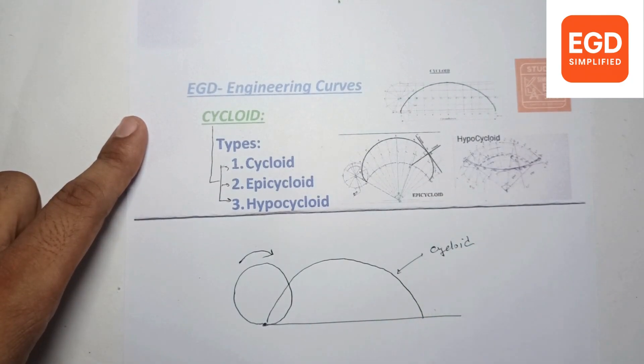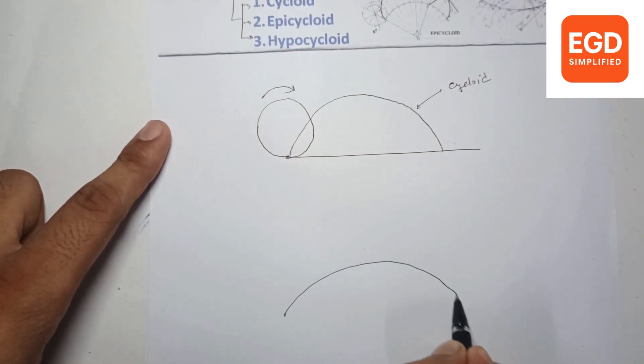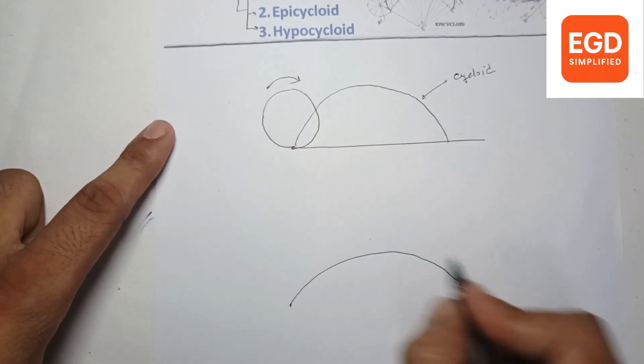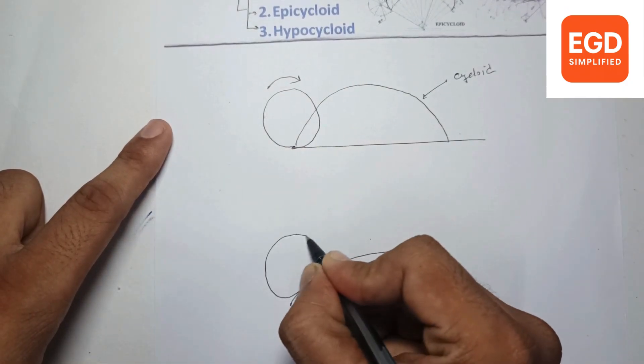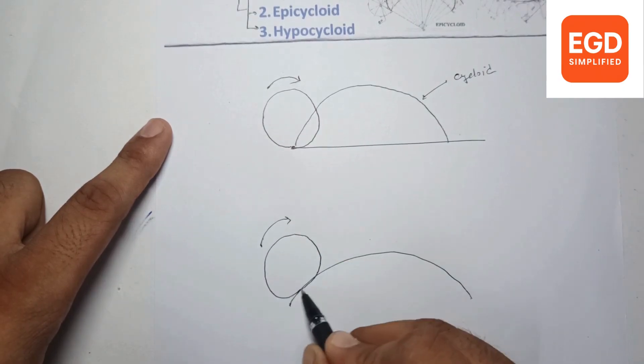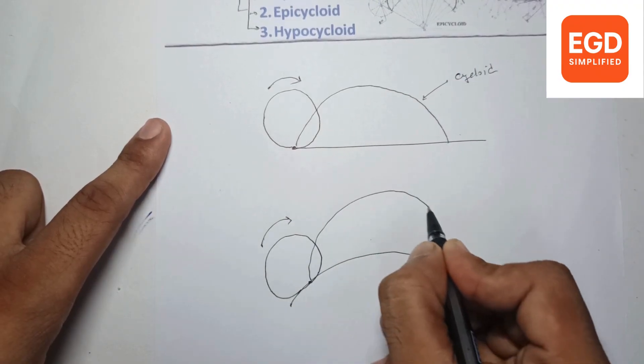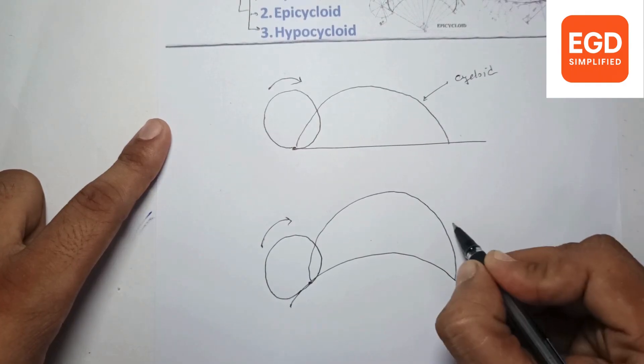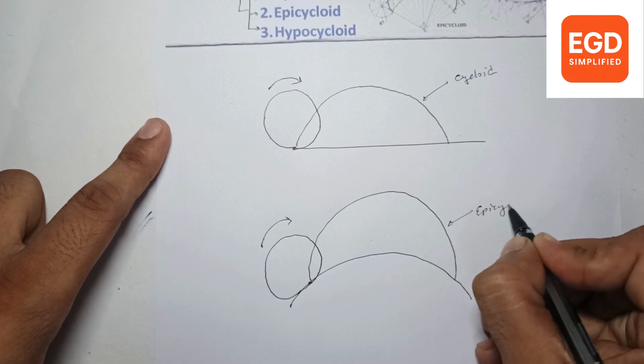Then there is epicycloid. Suppose there is a circular entity, like a bumper, and our vehicle is moving on top of it. When it completes one revolution, if we trace the path of any point, the curve we get is called epicycloid.